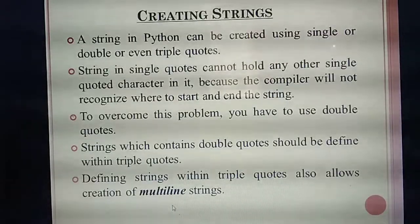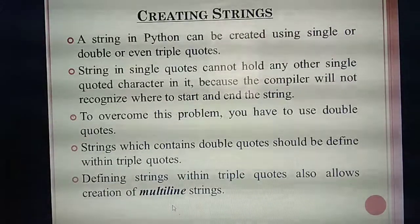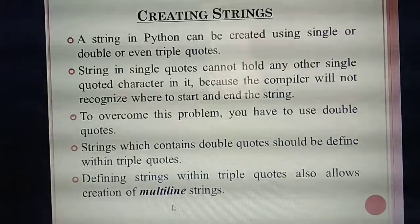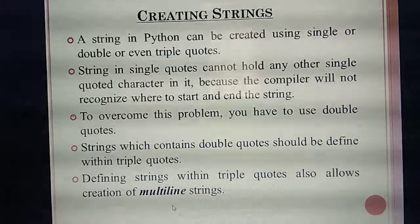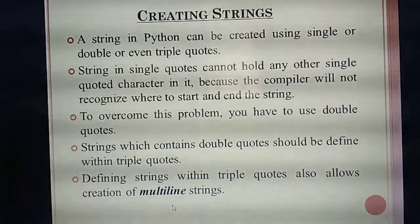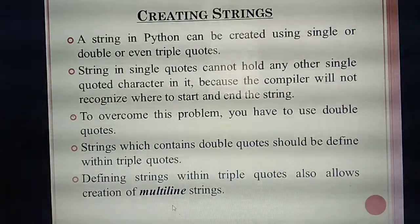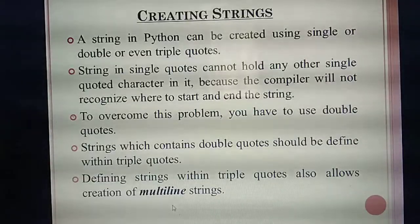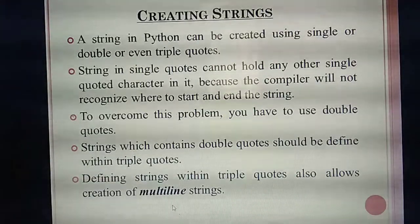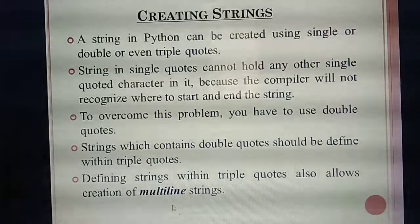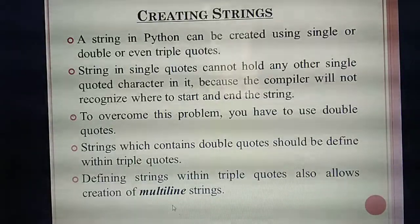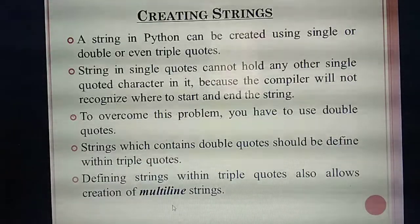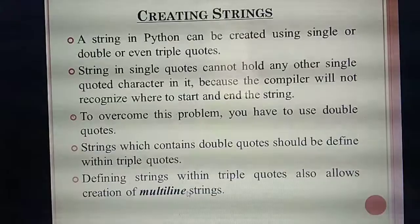You can create strings in single, double, or triple quotes. Why use double quotes? Because sometimes a sentence contains a single quote and the compiler cannot recognize where the sentence starts and ends. To overcome that problem you use double quotes. For a big paragraph, use triple quotes — the paragraph inside should be in double quotes, and those strings are called multi-line strings.